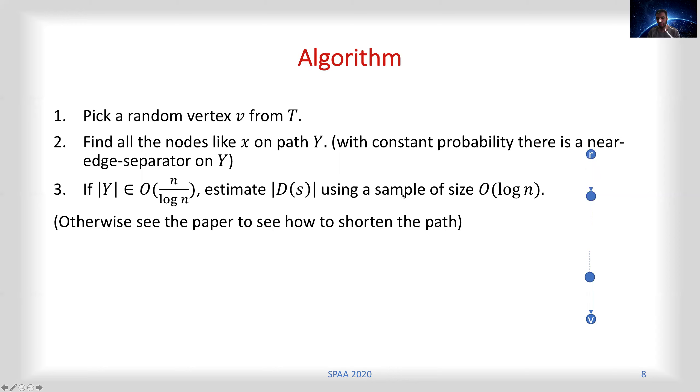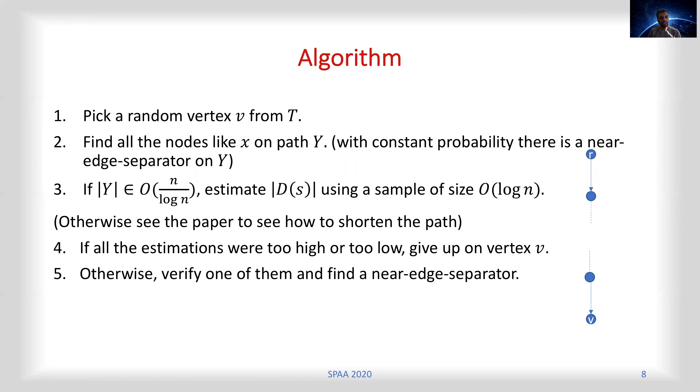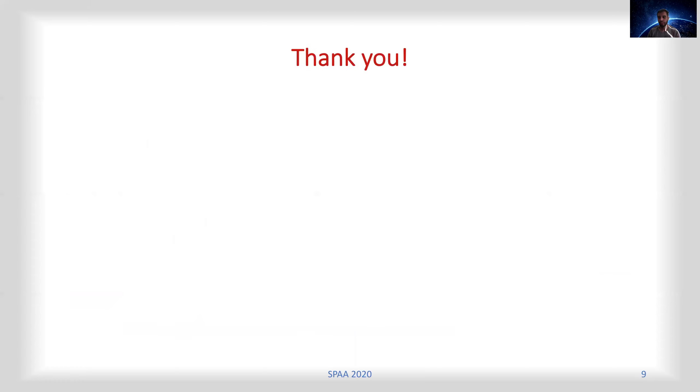If all of the estimations were too high or too low, just give up on that vertex v and take another vertex. Otherwise, we verify one of these edges by finding the total number of descendants of the child node and we find the near-edge separator. It results in a quasi-linear number of past queries in O(log n) rounds. Thank you for your attention.